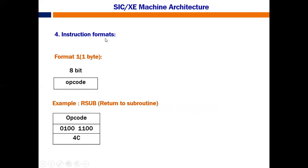Format 1 is the first instruction format. It takes 1 byte of memory, which is 8 bits. All 8 bits go for the opcode itself, meaning there is no separate memory allocated for addresses. The format is simply 8 bits for the opcode of any instruction.